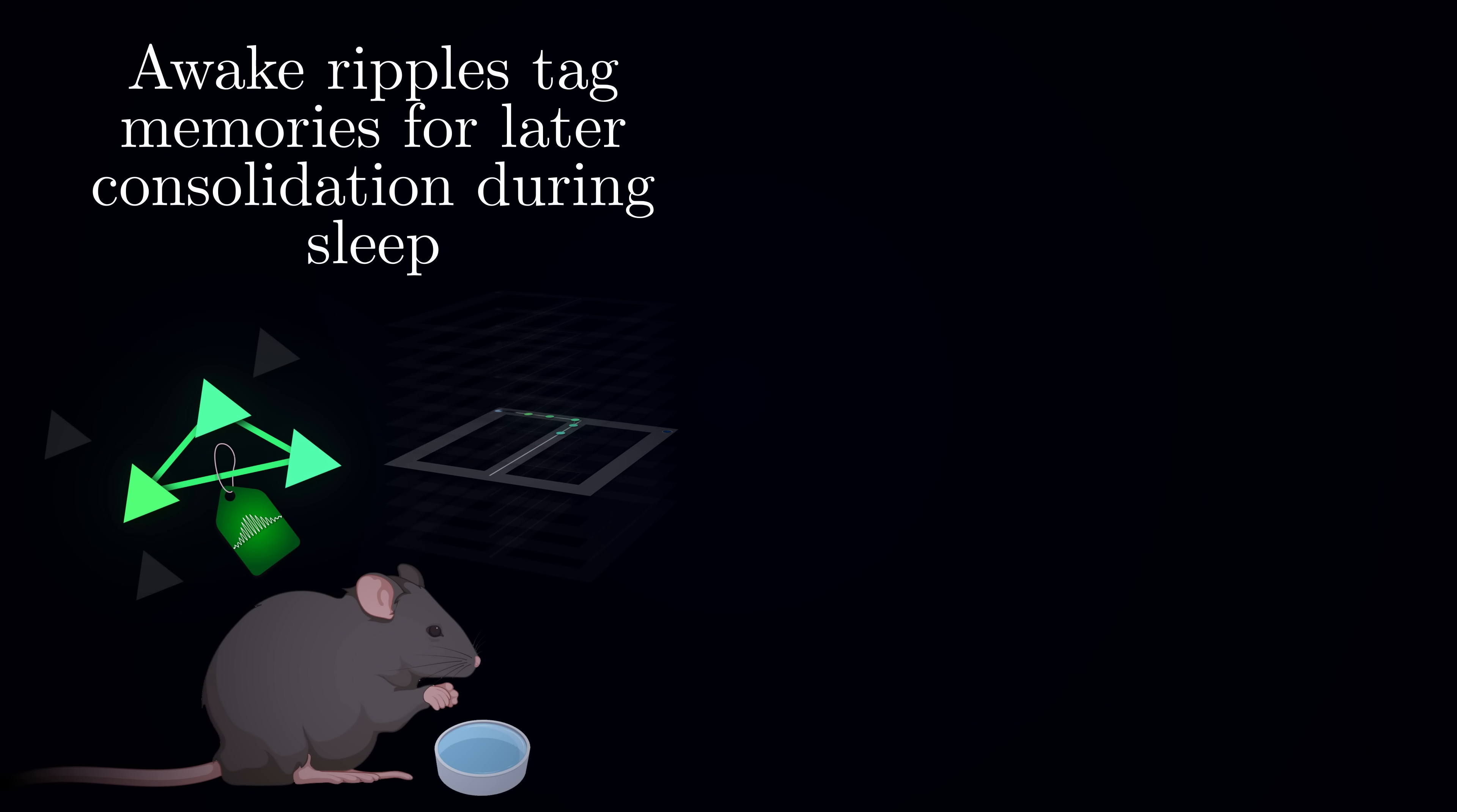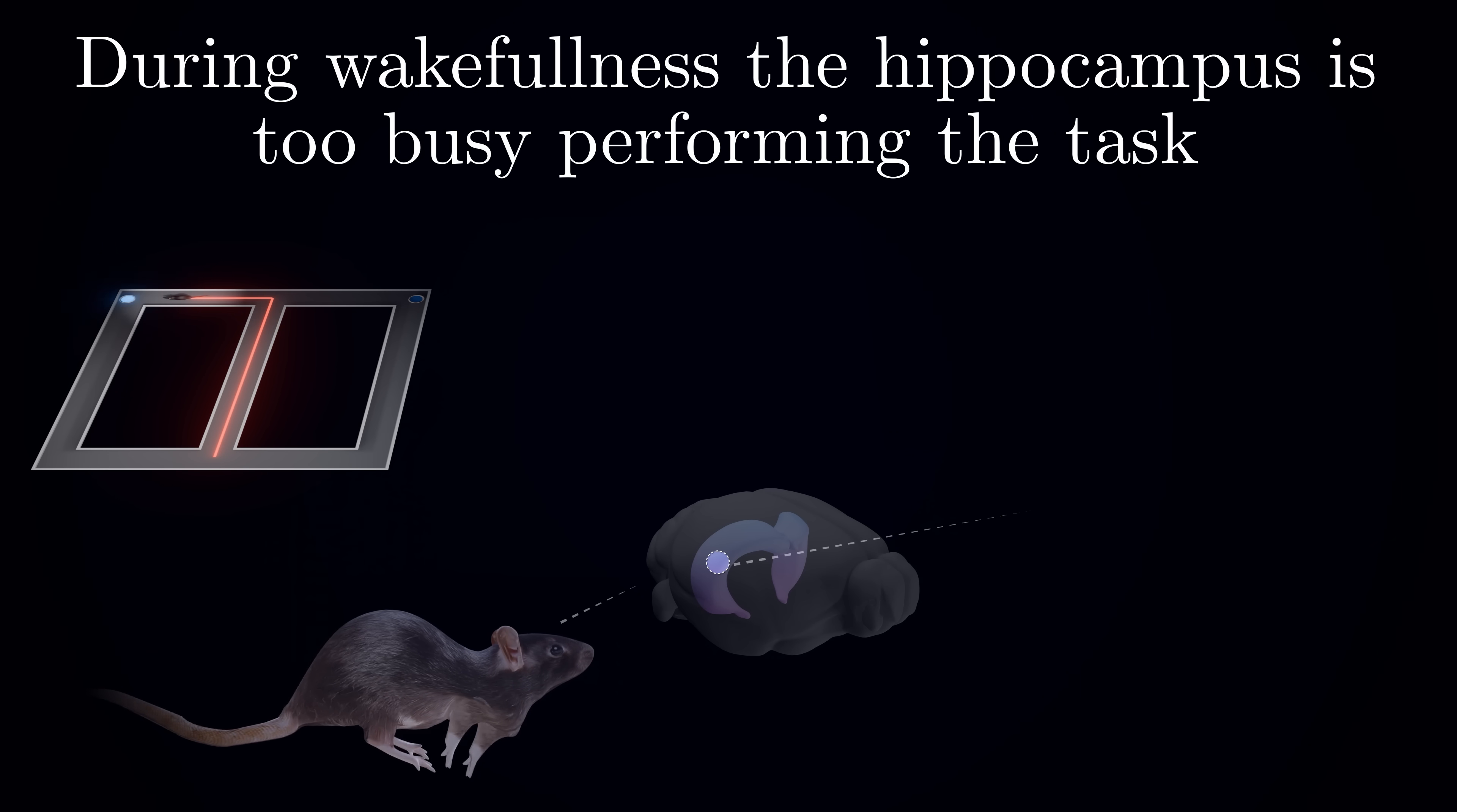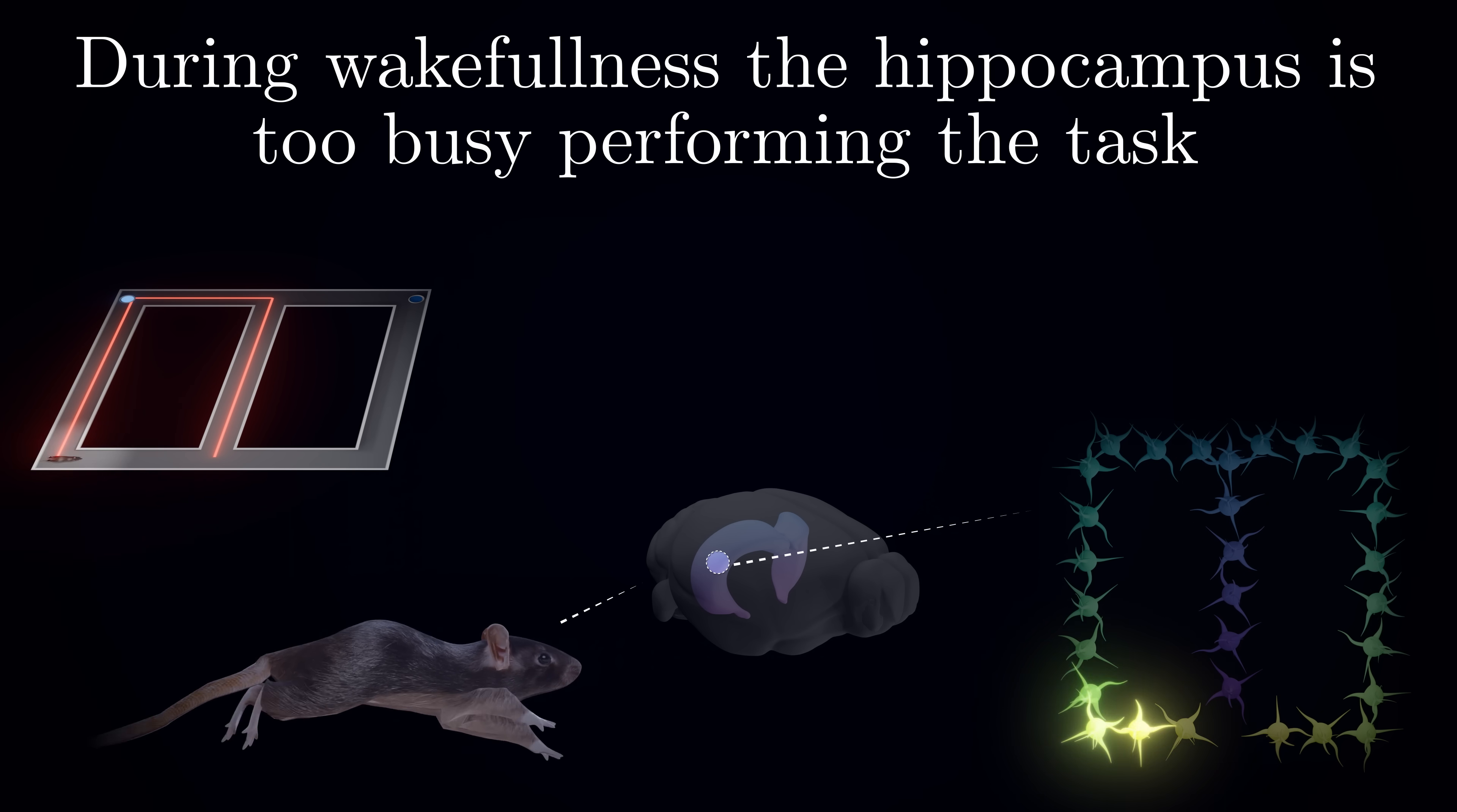But why not consolidate memories immediately during these awake replays? The answer lies in how memory consolidation works. First, the cortex needs to be in a specific brain state to receive information from the hippocampus – a state that occurs only during sleep. Second, a handful of replays isn't enough. Patterns need to be repeated multiple times to be properly transferred to cortical circuits. During waking hours, the hippocampus can't dedicate itself to endless replay. It needs to keep tracking ongoing experiences and maintaining the cognitive map as the animal performs the task.